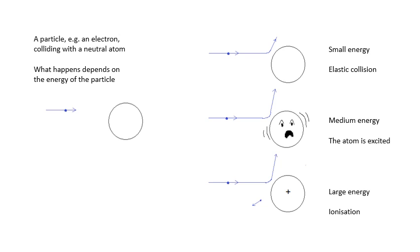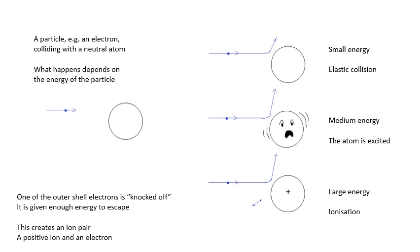Kinetic energy is conserved. If the particle has lots of energy, then it will ionize the atom — ionizing means it knocks off an electron and creates an ion. The electrons in an atom can't go anywhere; they're attracted to the nucleus. It's a bound system. They have negative potential energy. If we give them enough energy, they can escape. This creates an ion pair: a positive ion and another electron.